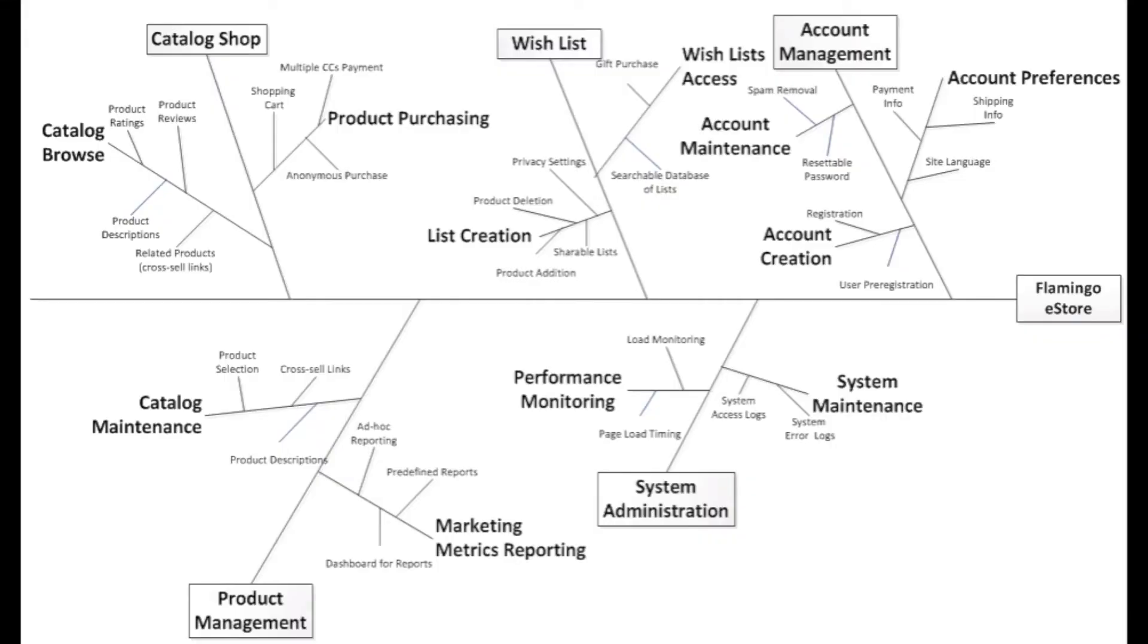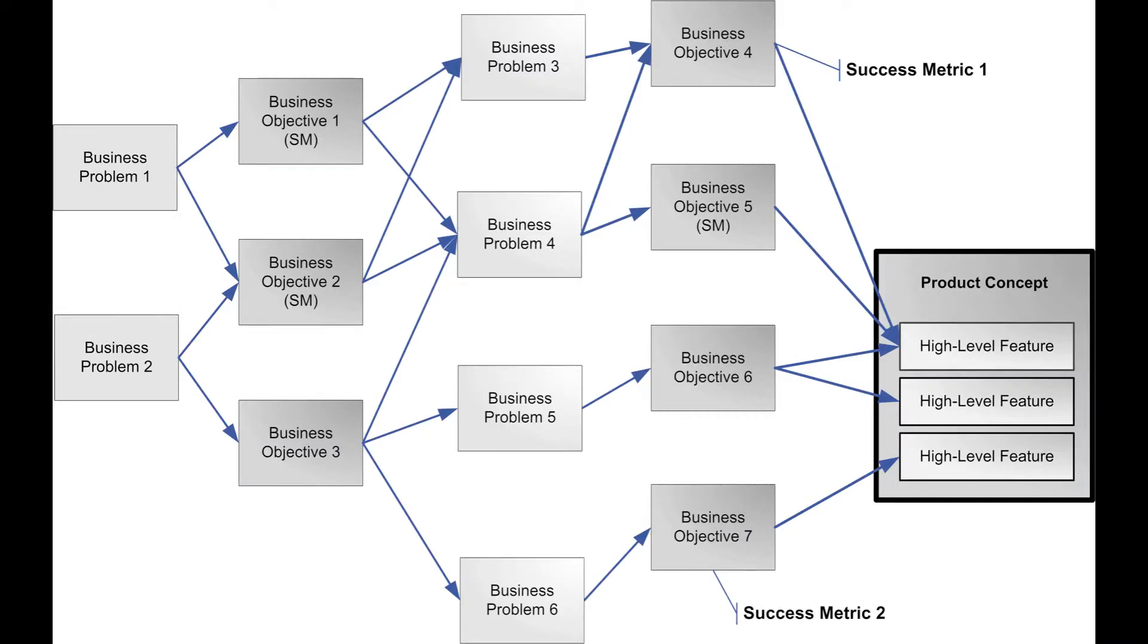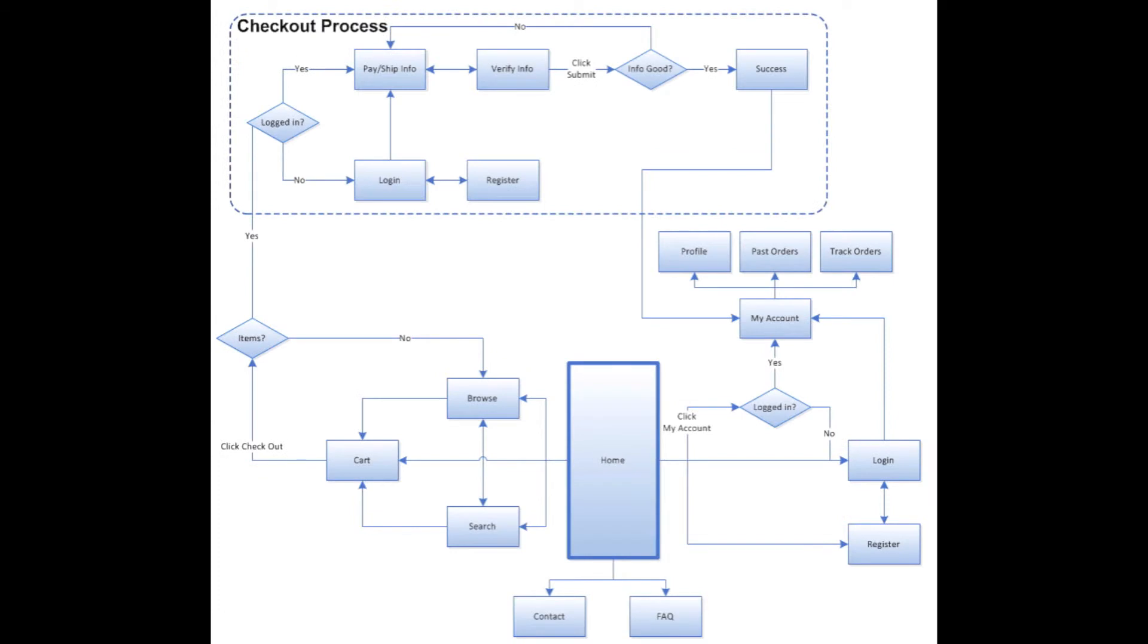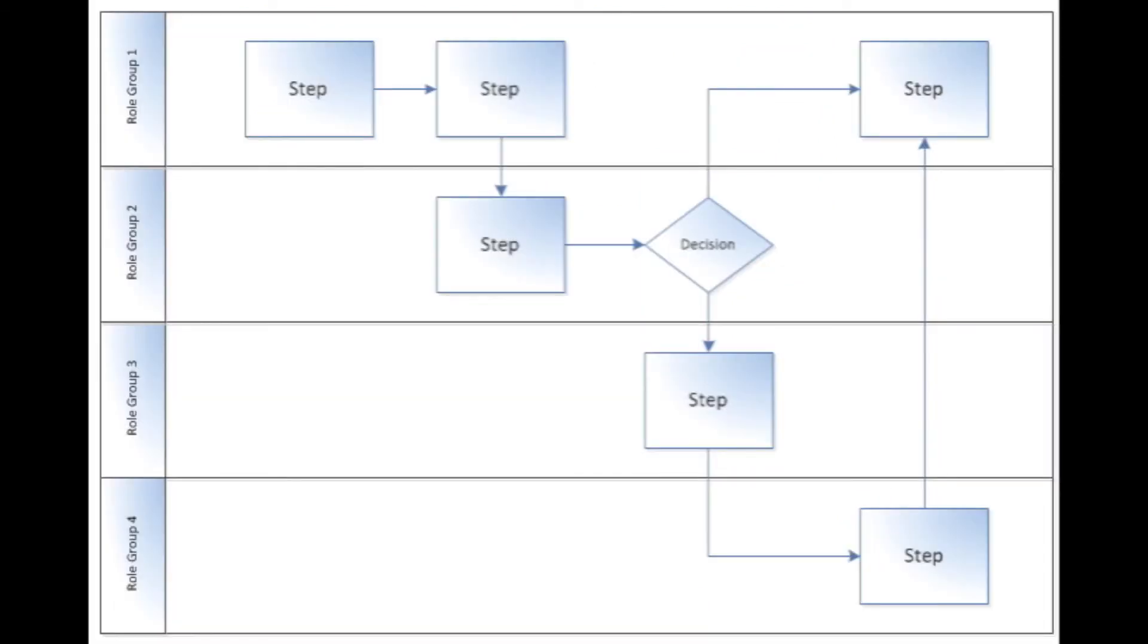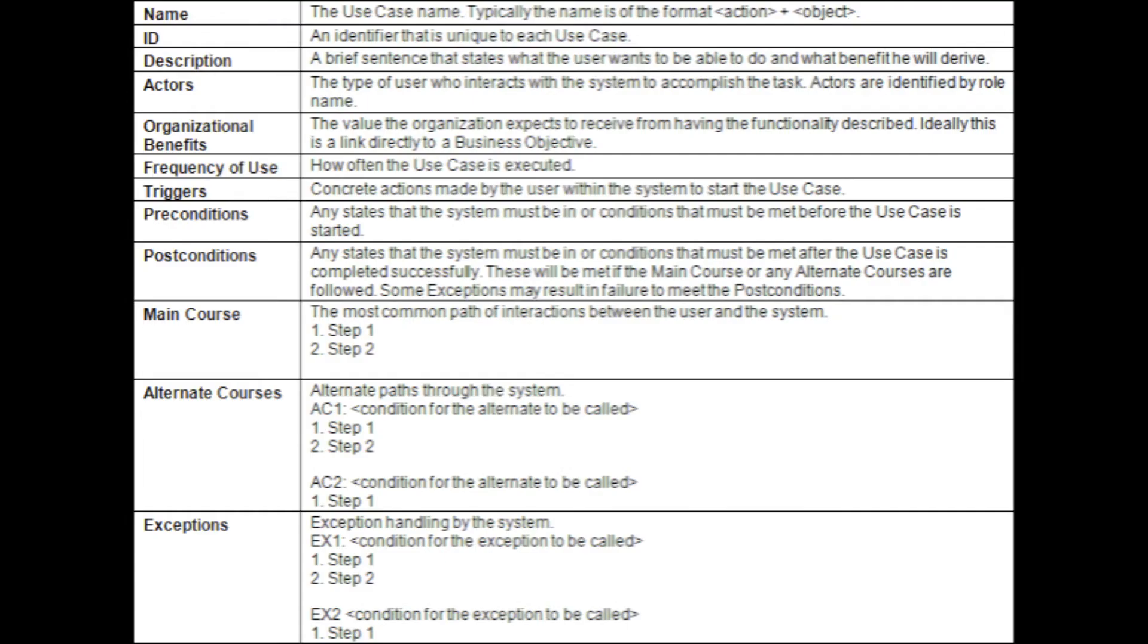Finally, feature trees can be used to identify gaps when deriving requirements. Review the tree against your other models and use cases to confirm that they cover all of the features. After the requirements have been organized by feature, make sure that each feature has requirements associated with it.